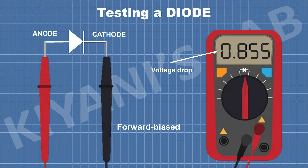Now if we connect the positive terminal of the meter to the anode of the diode and the negative terminal of the meter to the cathode of the diode, we will see the voltage drop on the screen.